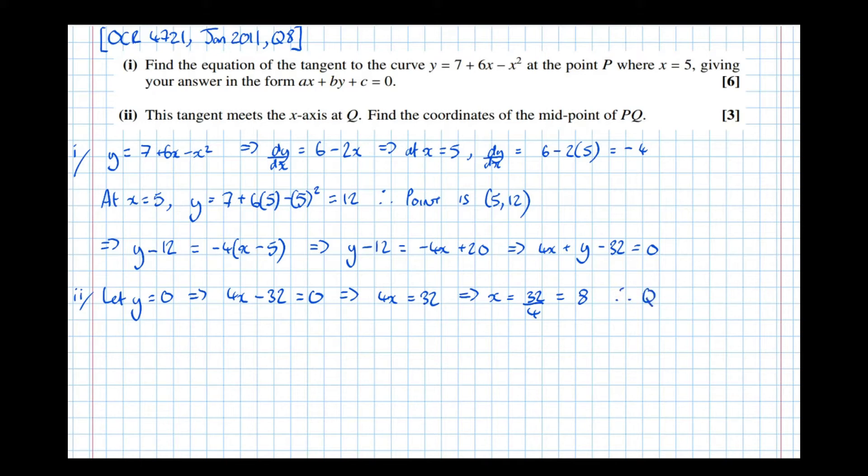Therefore, the point Q is (8, 0). Point P is where x equals 5. So we worked out that the point P earlier was (5, 12).